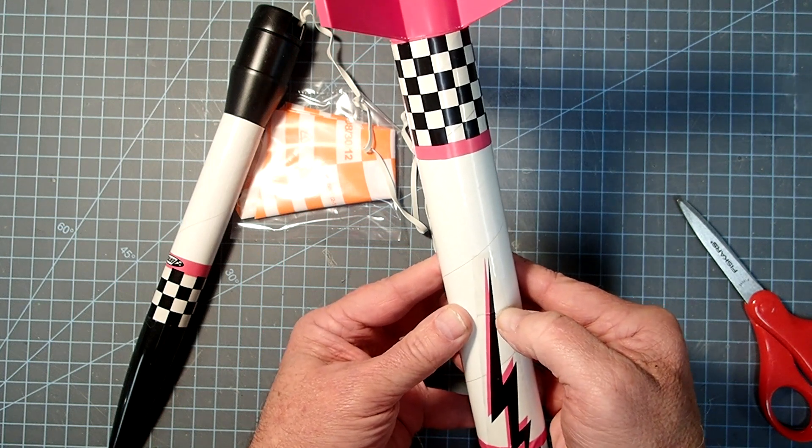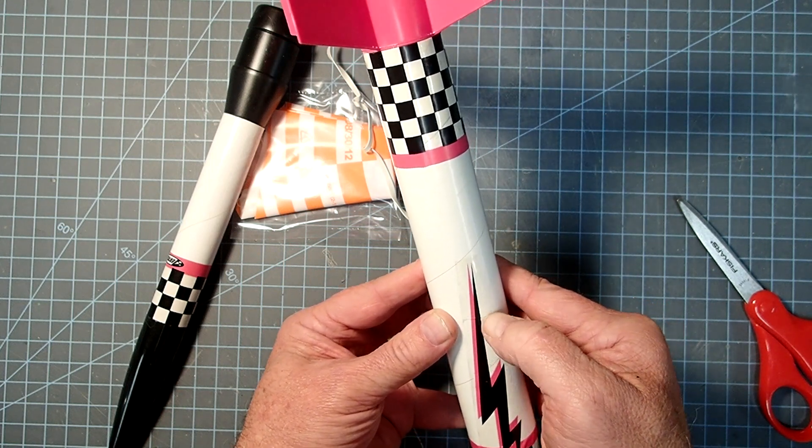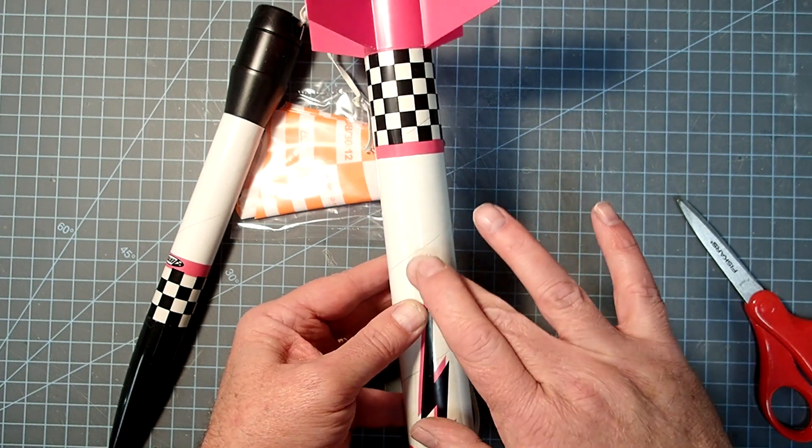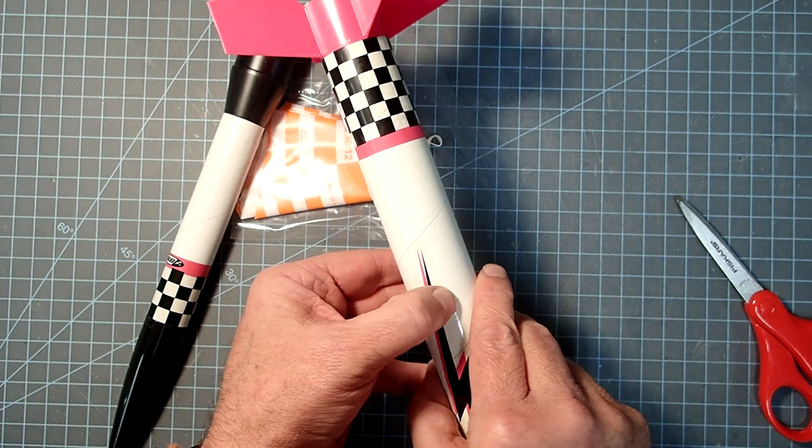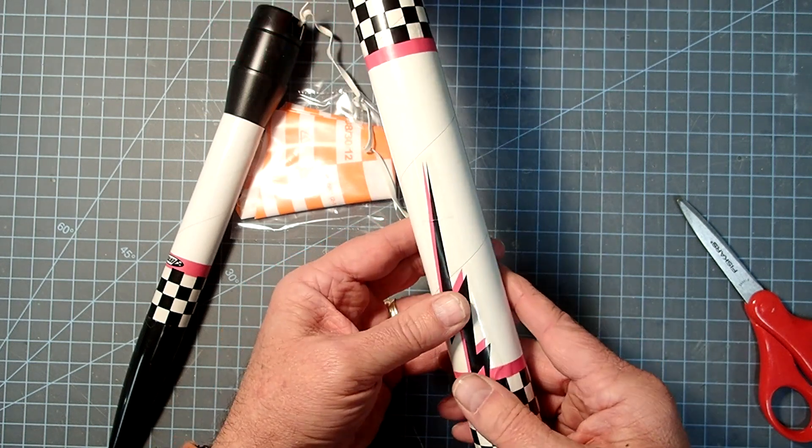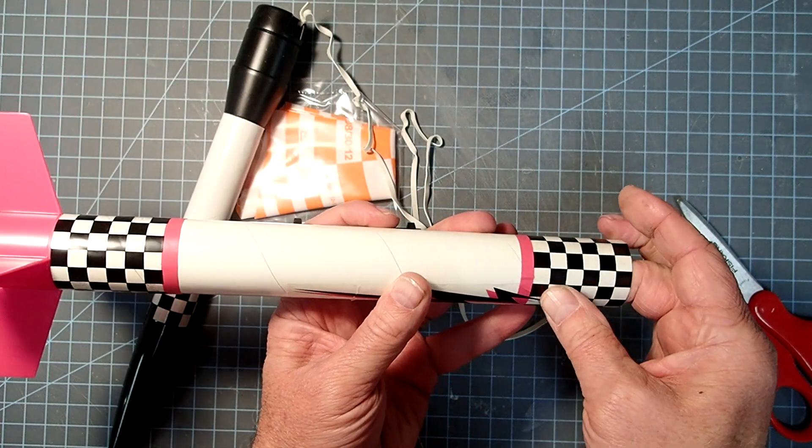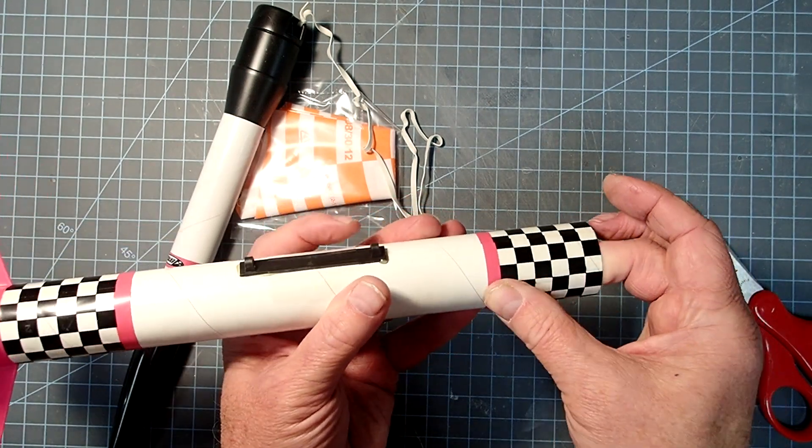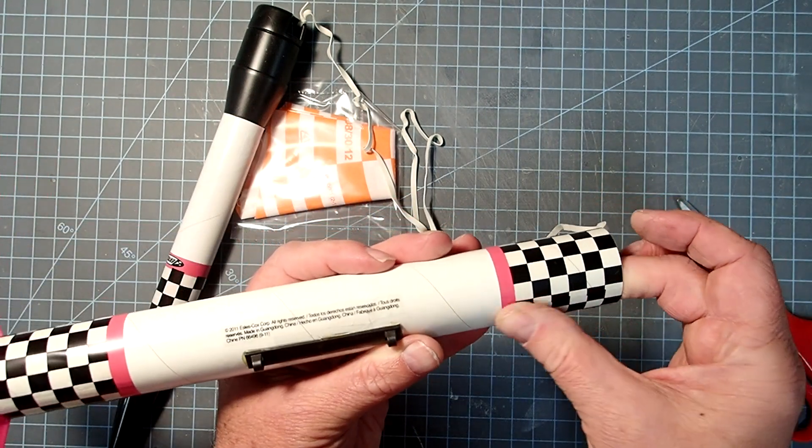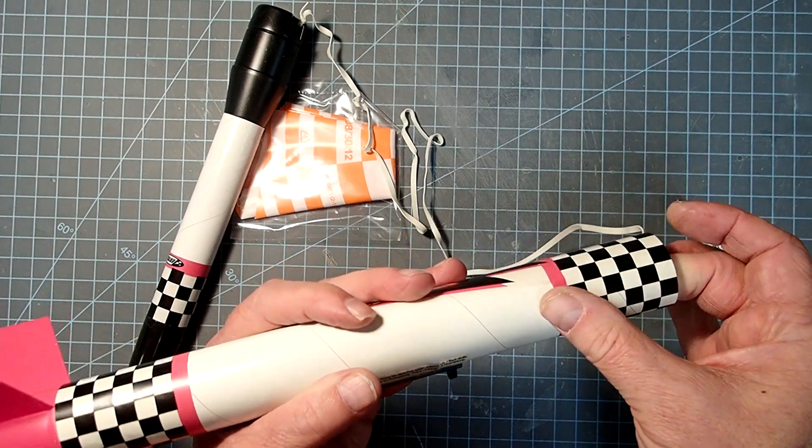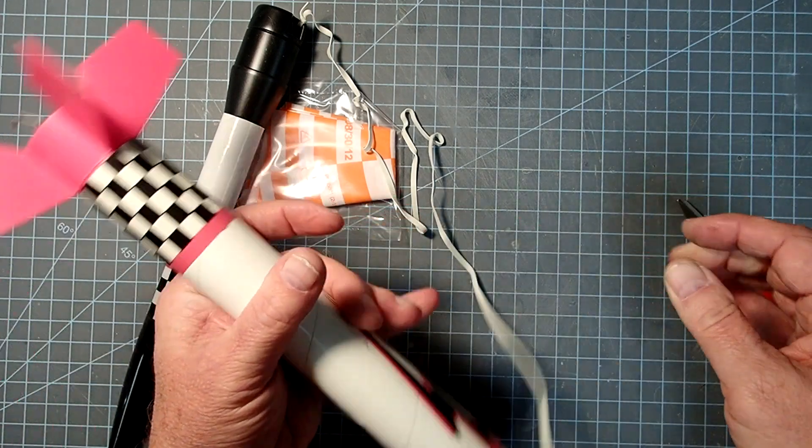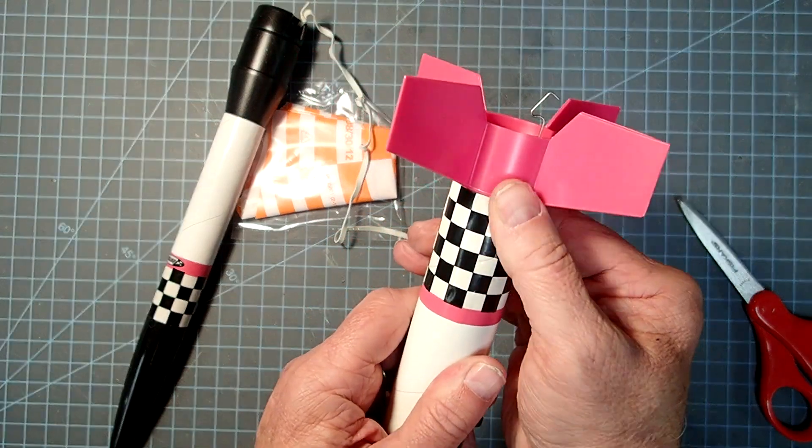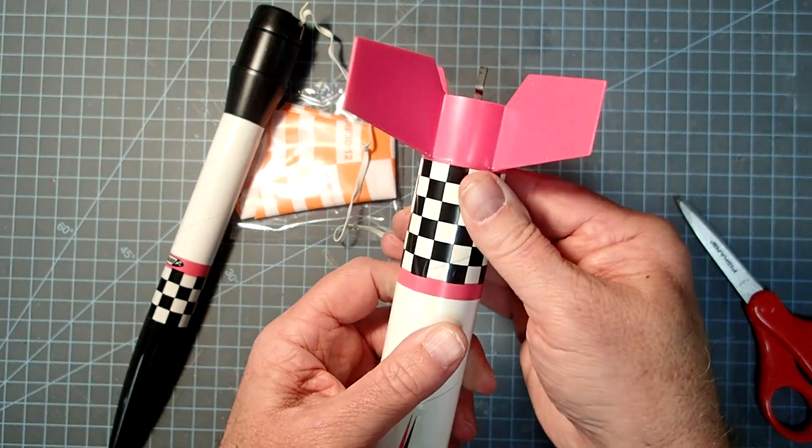I'm going to go ahead and press it down and just have a wrinkle or two there. If you have those big lifted up bubbles like that, they will attract dirt, and at least from a distance, you can't see the little crinkles there as well. I'm going to do that all the way around and just kind of press everything down, and just try and work the bubbles out as best that you can.